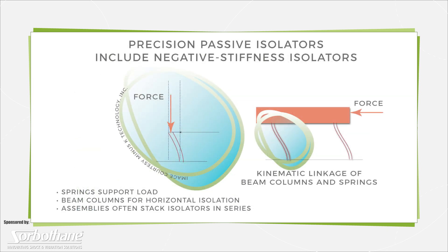Precision passive isolators include negative stiffness isolators, which decrease system natural frequency upon loading via a kinematic linkage of beam columns and springs, typically stacked in series for tilt, horizontal, and vertical motion.